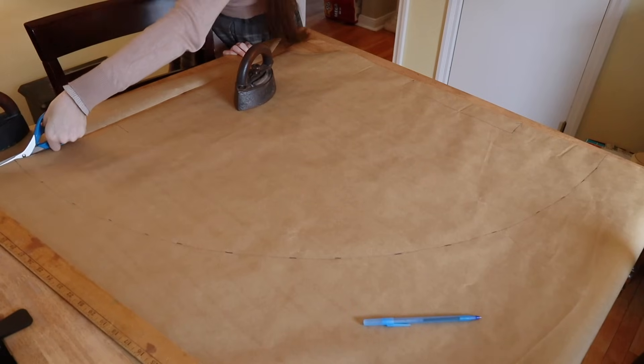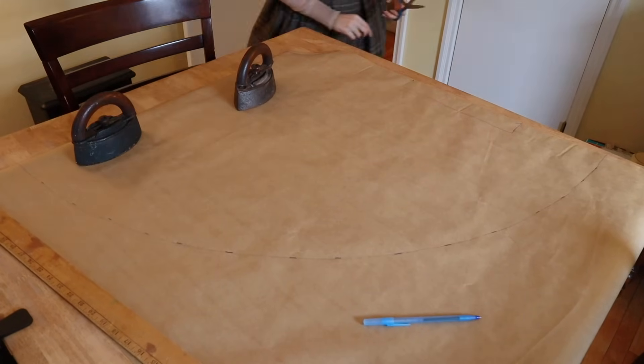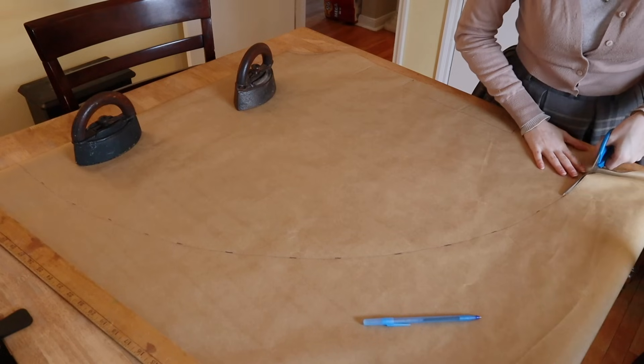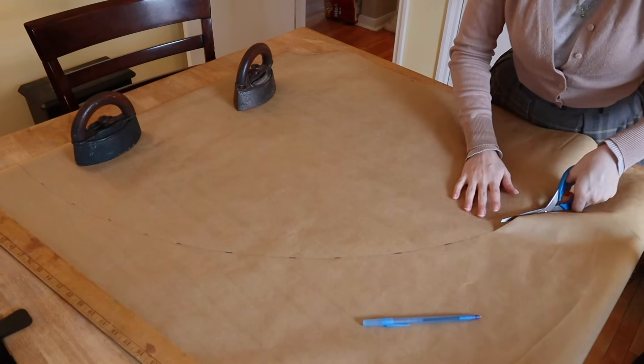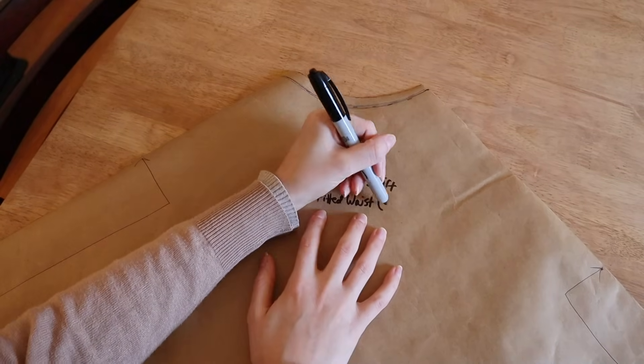I've built in seam and hem allowance at the top and bottom edge, but I left the sides without any allowance. I think this is the most convenient to use, but you could add seam allowance here if you prefer, but whichever you choose you should definitely mark the pattern.